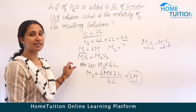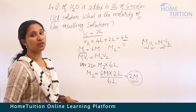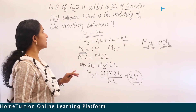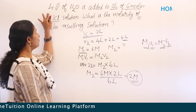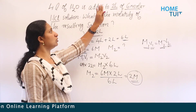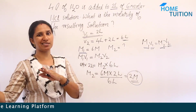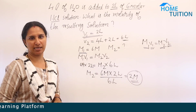The molarity of the resulting solution after adding 4 liters of water to 2 liters of 6 molar HCl is 2 molar.